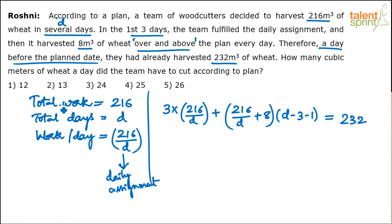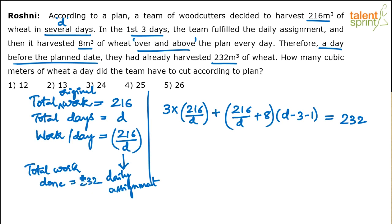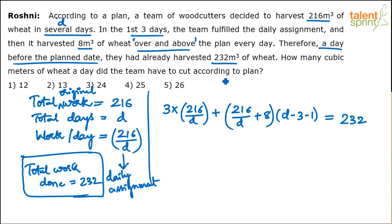The total original work is 216, but the total work actually done is 232. That's the key distinction. So we have one equation with one variable d. Solve and get d. The question asks for cubic meters per day according to the plan, which is 216/d. So once we find d, the answer is 216/d.